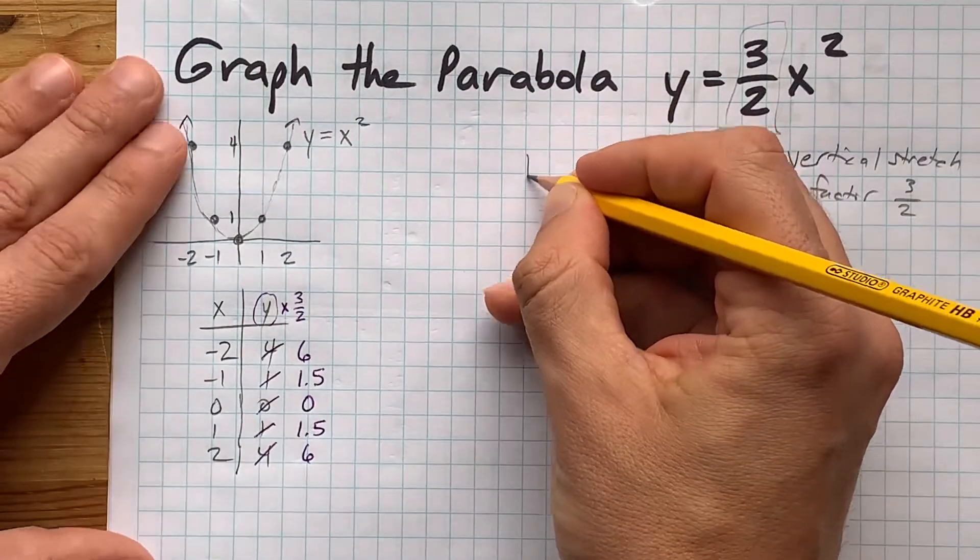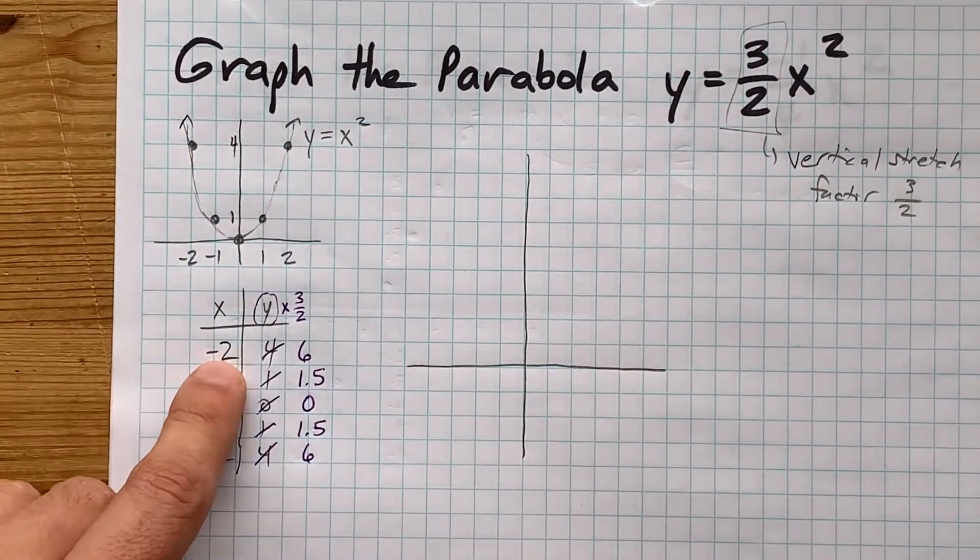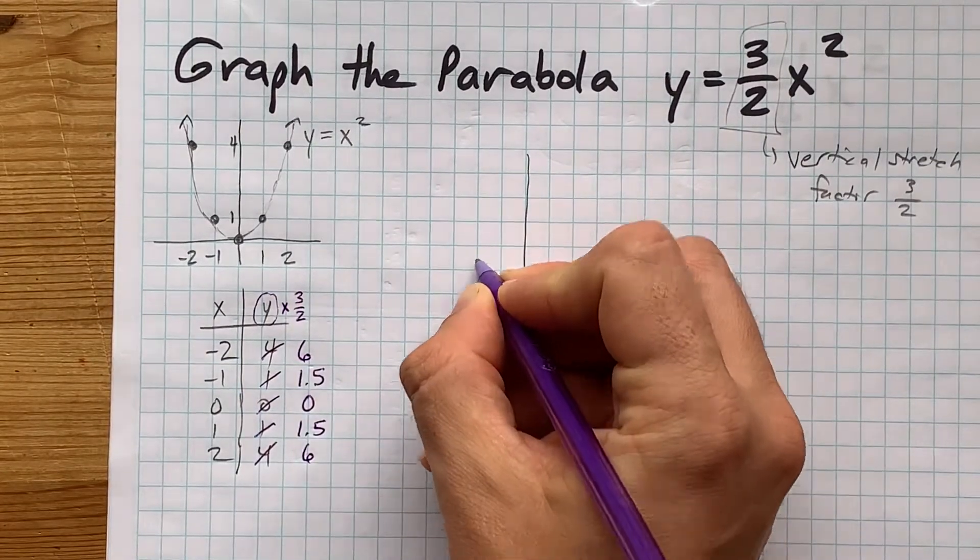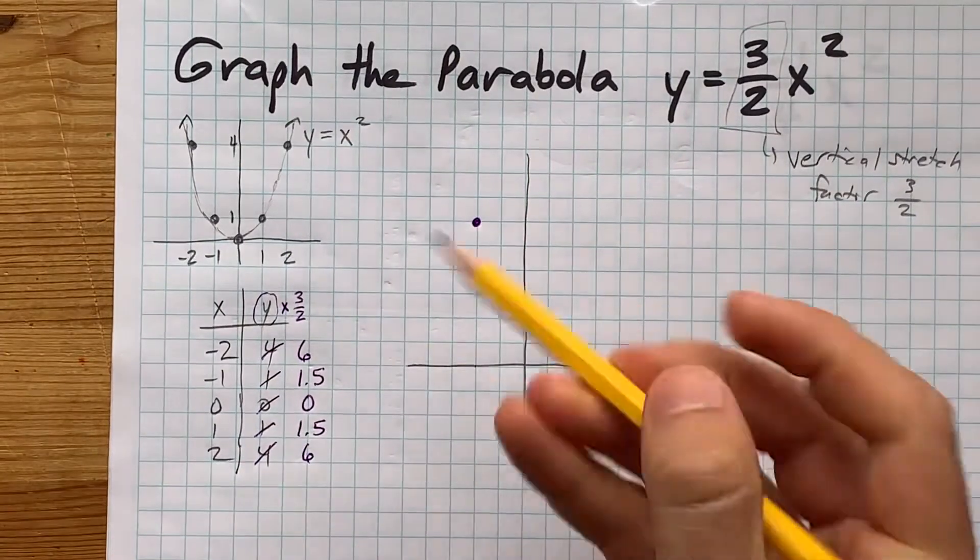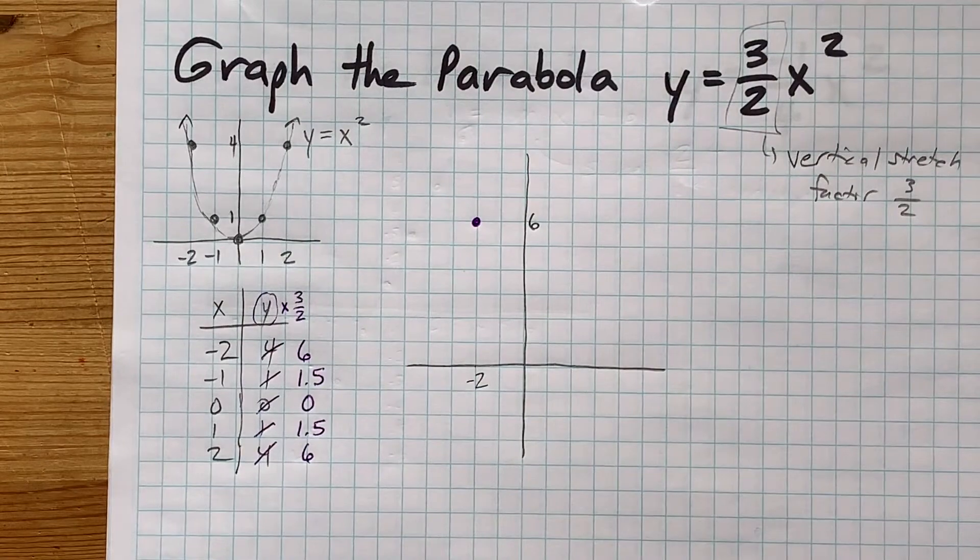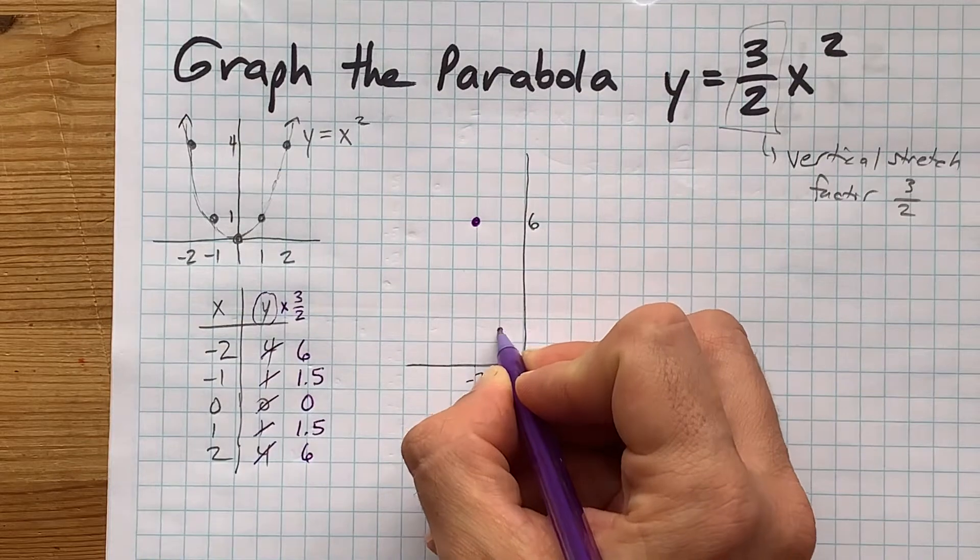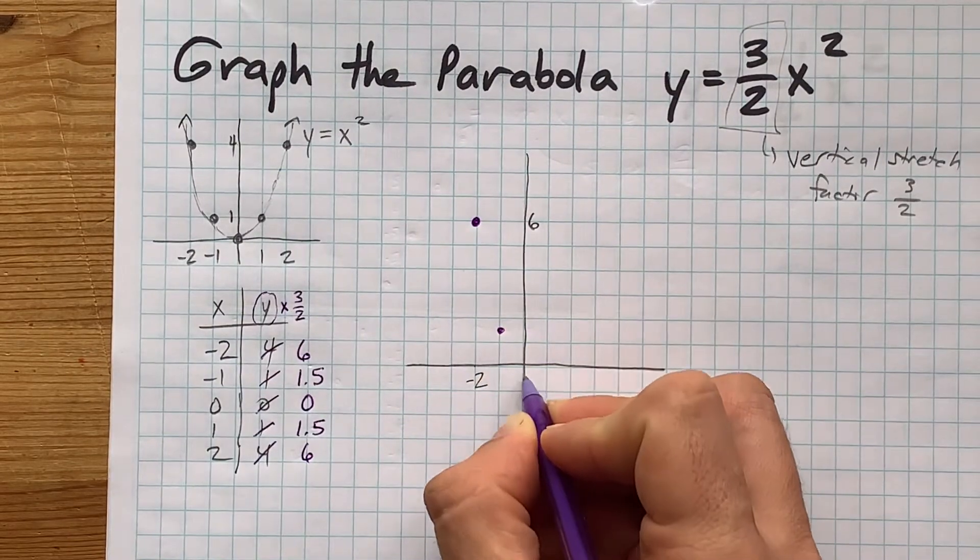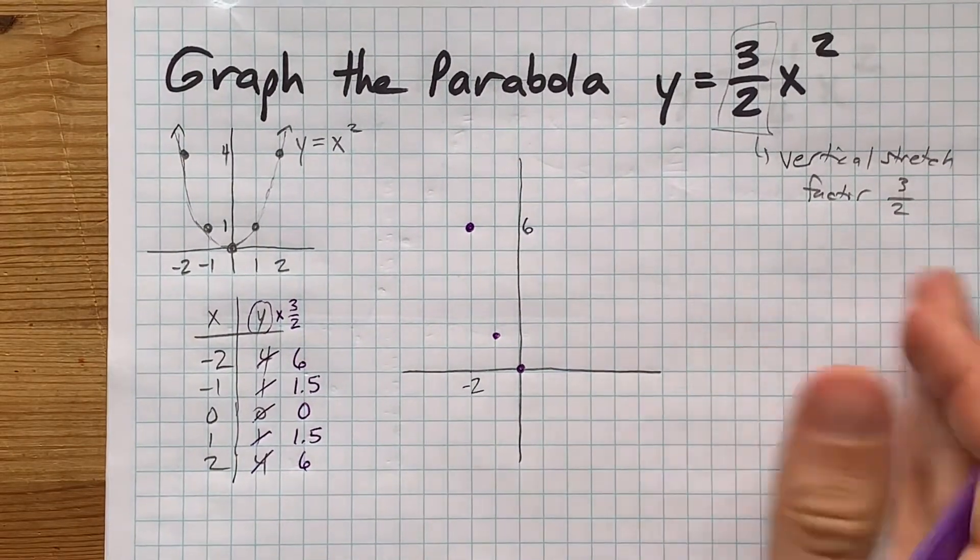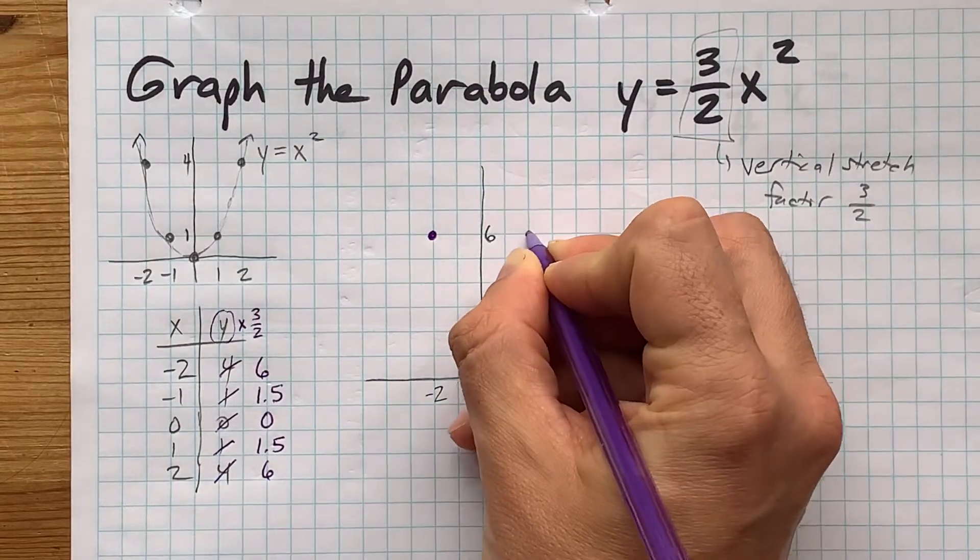What that means is that if we were going to draw the final curve here, we would put a point at negative 2 comma 6. Negative 2 comma 2, 4, 6. I'm just going to label these axes for you so you can see where we are at. We'll have a point at negative 1 comma 1.5. That's about here. 0, 0 is unchanged because when you stretch 0, it's still 0. 1 comma 1.5 and 2 comma 6.